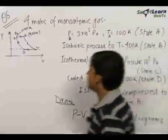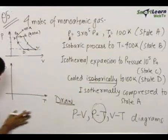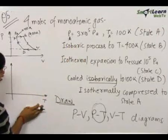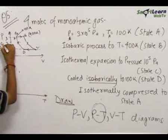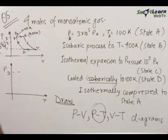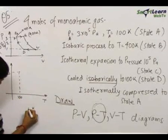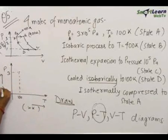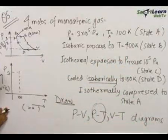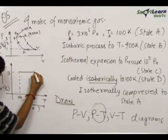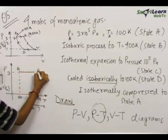Now let us draw the PT diagram. Starting from state A, the pressure was 3×10⁵ Pascals and temperature was 100 Kelvin — let this be point A on the PT axes. It undergoes an isobaric process, so the pressure is constant and the temperature increases to 400 Kelvin. This is simply a horizontal line at constant pressure going from 100 K to 400 K. This gives point B at 3×10⁵ Pa and 400 K.